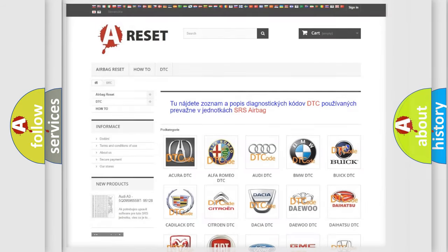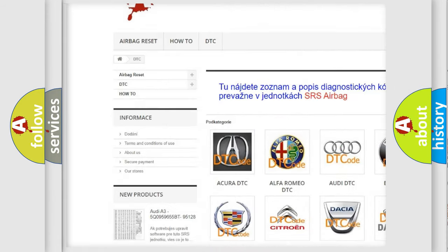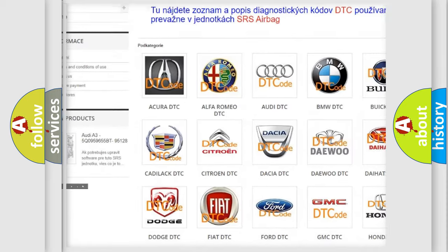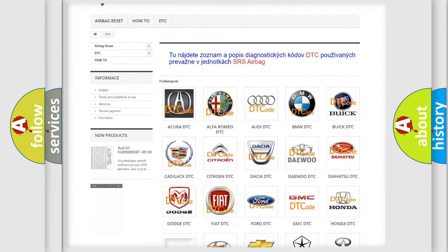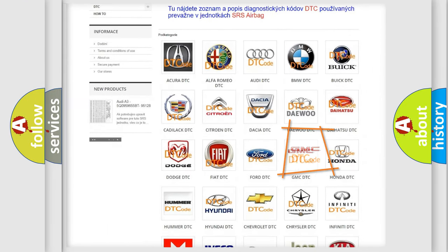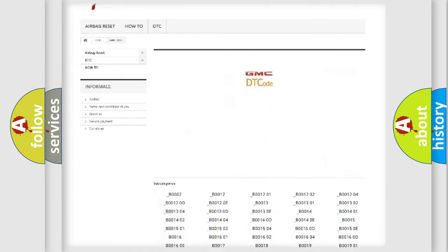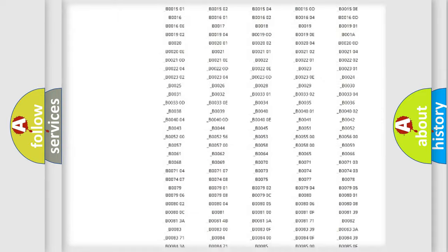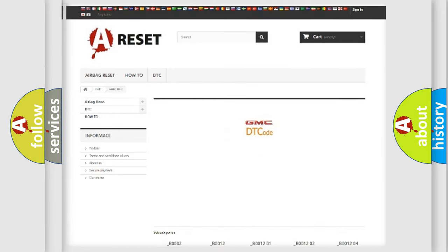Our website airbagreset.sk produces useful videos for you. You do not have to go through the OBD2 protocol anymore to know how to troubleshoot any car breakdown. You will find all the diagnostic codes that can be diagnosed in GMC vehicles, and also many other useful things.